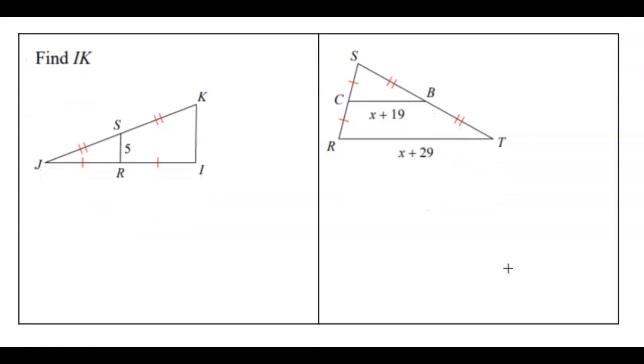On my first example, it says find IK, and I'm going to go ahead and label that length. Notice, they don't tell you anything about the mid-segment, but if I see these little marks, that means that S is the midpoint, and these two are equal, so that's the midpoint. And so this line, since that's the midpoint, it means that SR is the mid-segment. So if I want to find that length, that means that 5 was half of the base. So 5 is equal to half of KI. That means that KI equals 10.